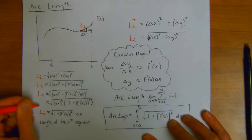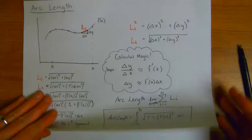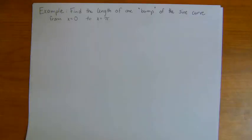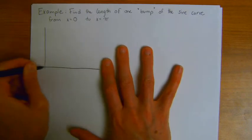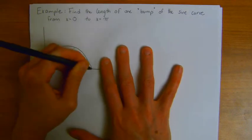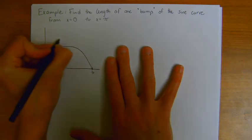So let's go ahead and look at an example. Now that we have a formula. So let's look at an example of finding the length of one bump of the sine curve. So that would be from x equals 0 to x equals pi.